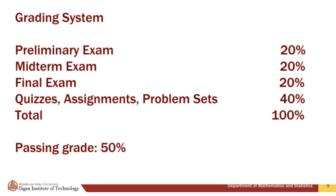20% for the preliminary exam, 20% for the midterm exam, 20% for the final exam, and 40% for the quizzes, assignments and problem sets. A total of 100%.